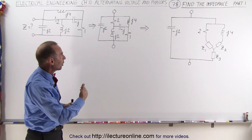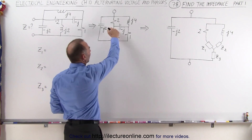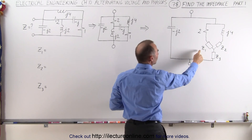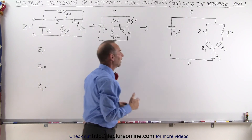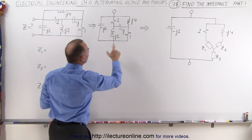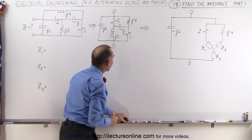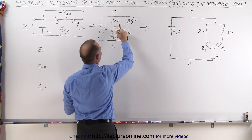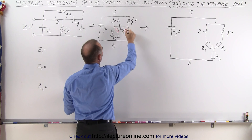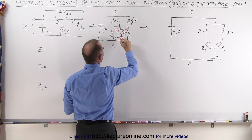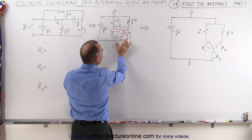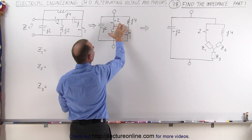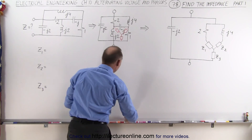We're going to do what we call a delta-to-Y conversion. Notice right here this is a delta, and we're going to convert that to this Y right here. To do that we have to compute z1, z2, and z3. z1 can be calculated as follows — it helps to draw the Y in here. Here would be our z1, over here this would be our z2, and when these two come together, over here we draw our z3.